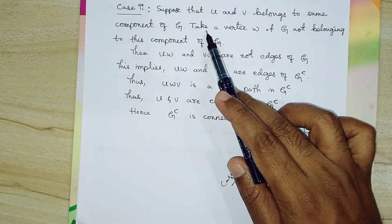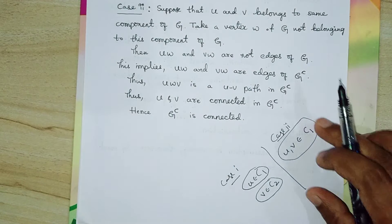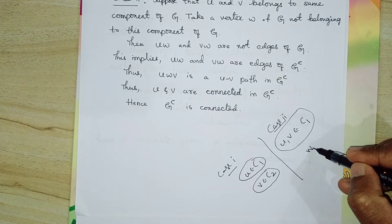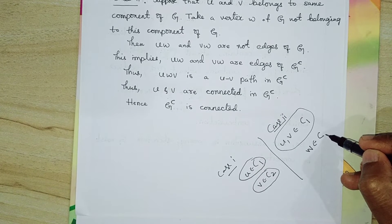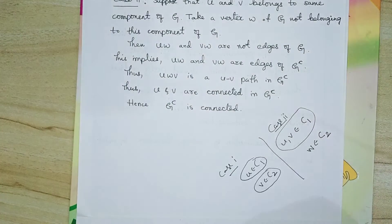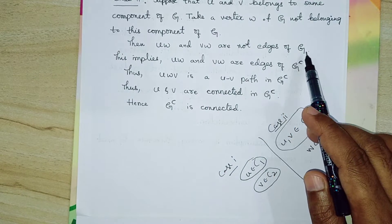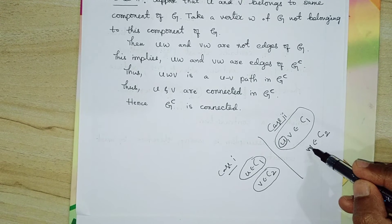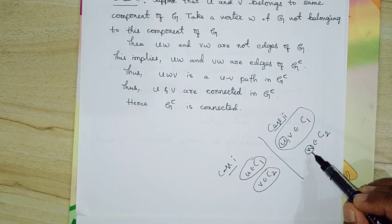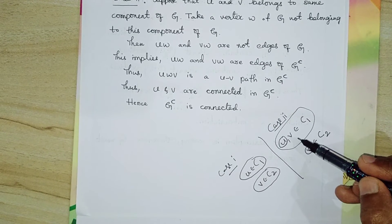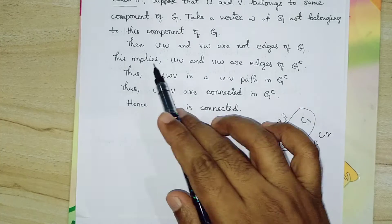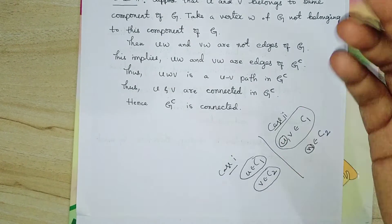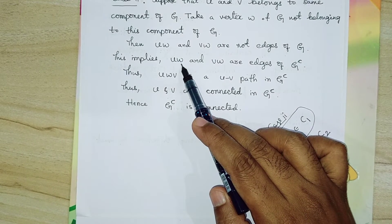Take a vertex W of G that does not belong to component C1 — choose W from outside this component, say from component C2. Then U and W are not adjacent in G, and V and W are not adjacent in G, because U and V belong to one component and W belongs to another component. An edge between them would be impossible. So neither UW nor VW are edges of G.